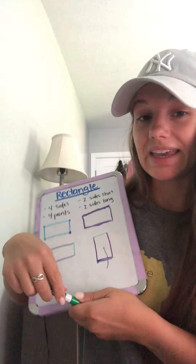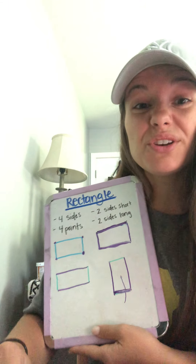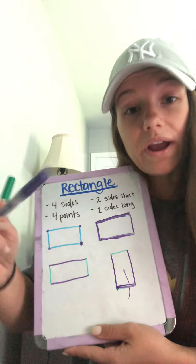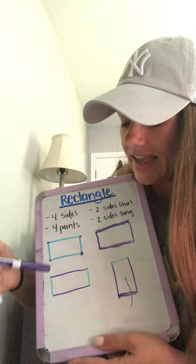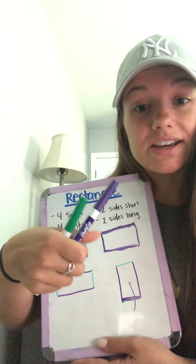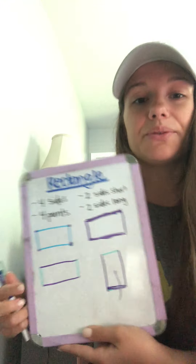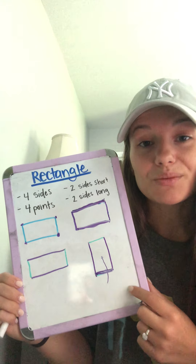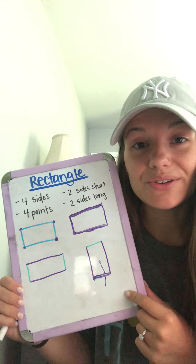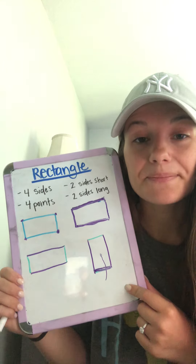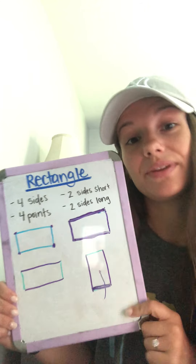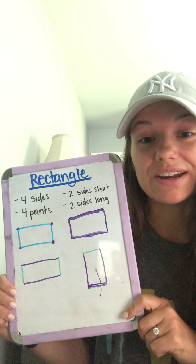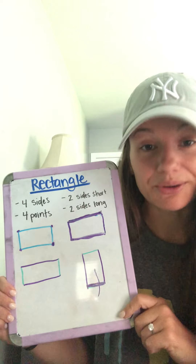I want you to get out your whiteboard and draw it just like Miss Lair, where one color is the short sides and one color is the long sides. Practice drawing those on your board. Then you can get out your play-doh and practice making it with play-doh. And after you make it with play-doh, you can do your worksheets.